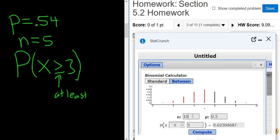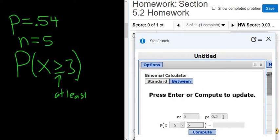Then just type everything in. In this case, N was 5, P is 0.54, and we want at least three. Boom. There it is.